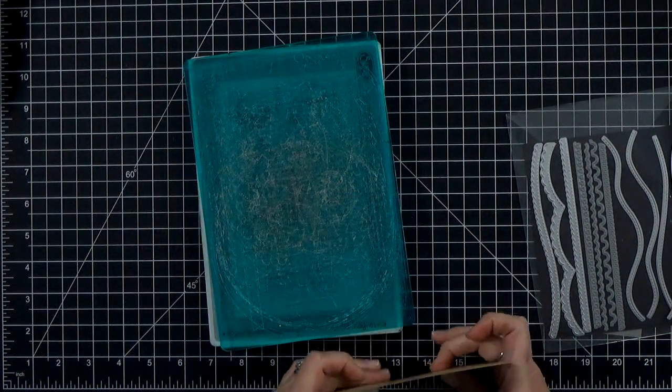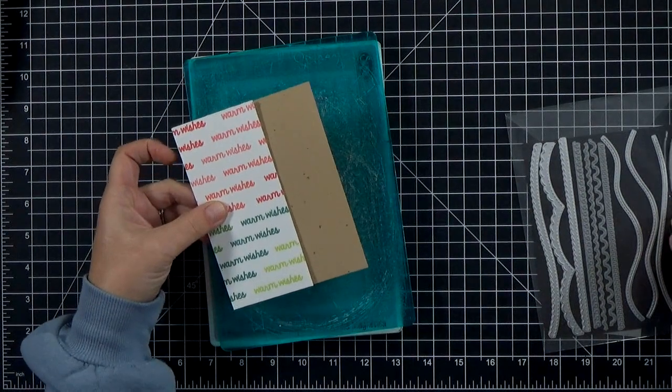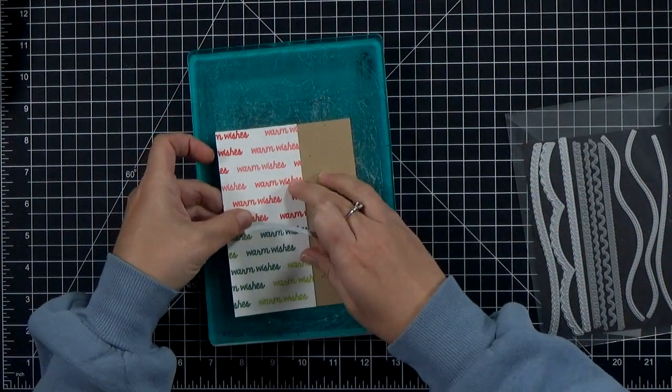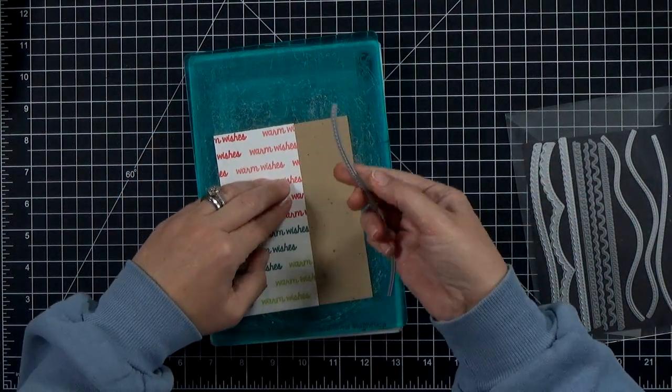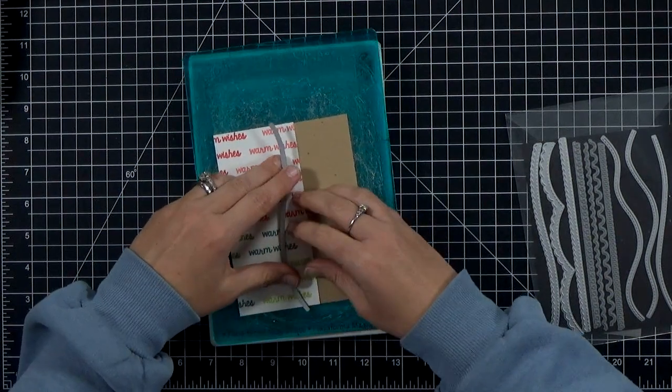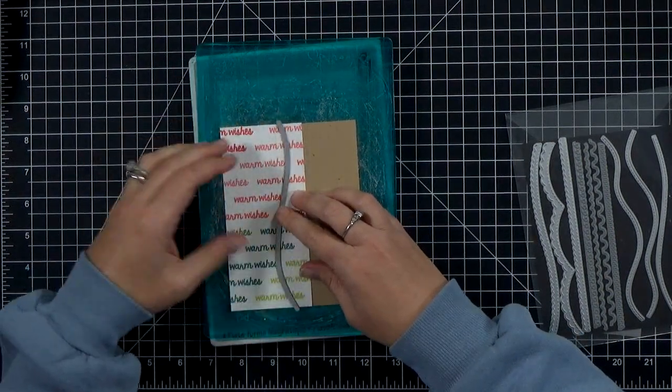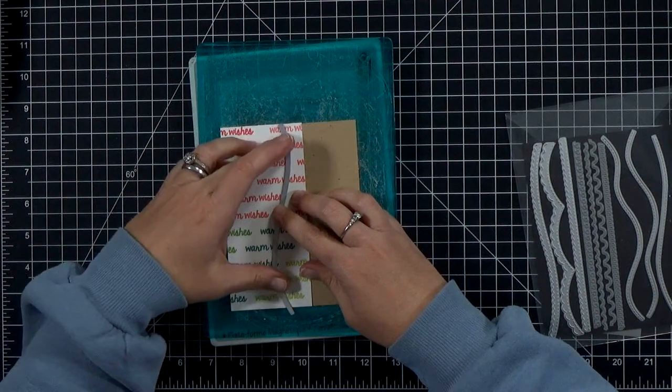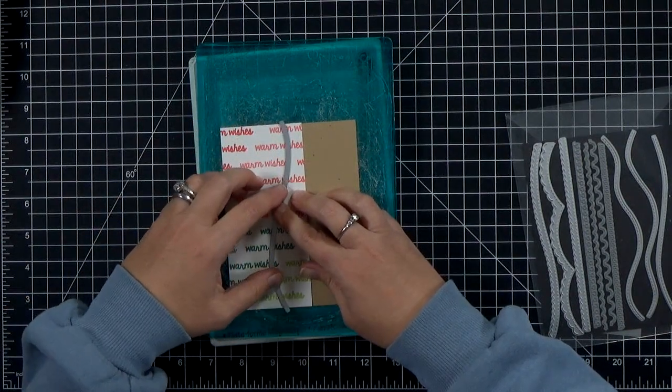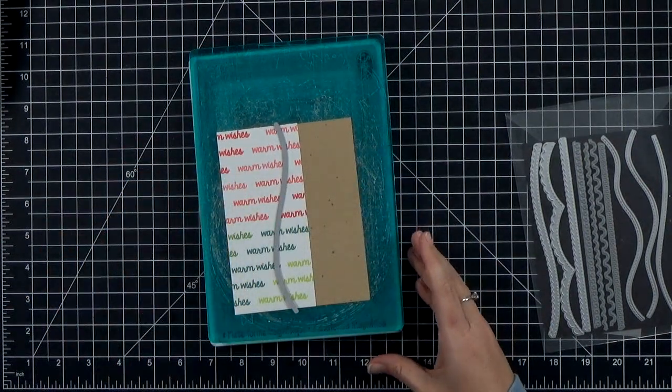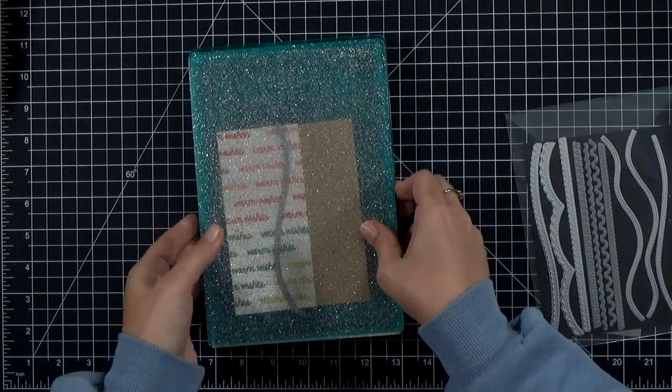And then the next step is to go ahead and die cut it. So I wanted to use that stitched hillside border, and I went ahead and I lined up the craft paper and the pattern paper at the same time, and I'm going to cut them both at the same time. These are 80 pound, and so it's thin enough that I can cut through both at the same time.